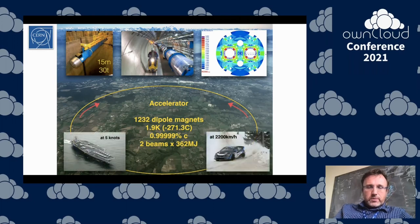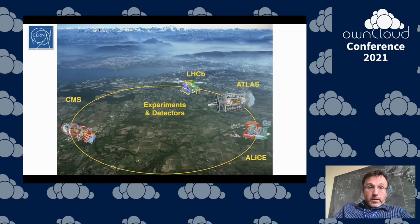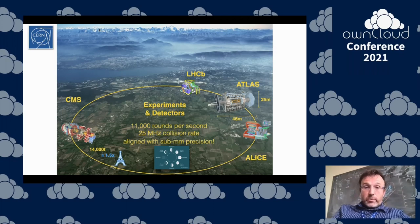In this accelerator, we collide a beam of matter and antimatter in opposite directions — we accelerate them and then collide them. The energy released corresponds roughly to a collision of an aircraft carrier cruising at five knots, or a rally car going at 2,200 kilometers per hour. From these collisions, we collect a lot of data through the detectors. We have several detectors — these are the four main ones — and we have a collision 11,000 times per second, each creating a lot of data.